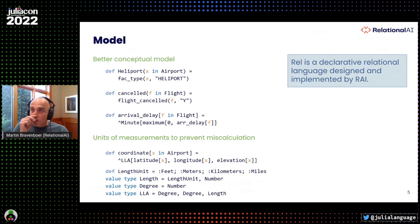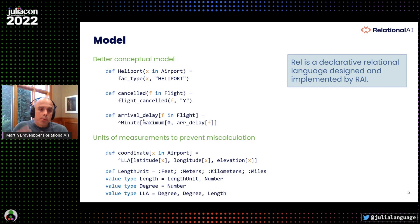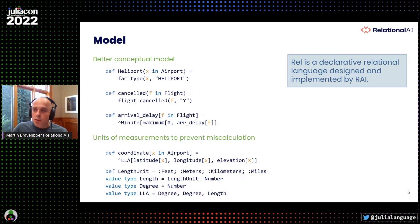What we do is allow you to define better models. For example, you can clearly define that a heliport is a subset of airports with certain properties. You can define that when a flight is cancelled, rather than working with a string like 'Y' and guessing what it means, you can very clearly define a relation of all cancelled flights and use those directly in your queries and business logic. You can turn data into data that has units — for example, an arrival delay is the maximum of zero and the observed delta, and you can specify that's in minutes. You can work with airport coordinates and clearly specify the units of distance — feet, meters, or kilometers — and you've all heard horror stories of things going wrong with wrong units.